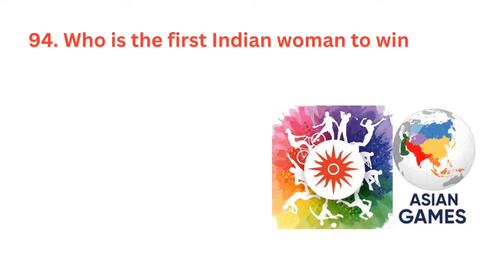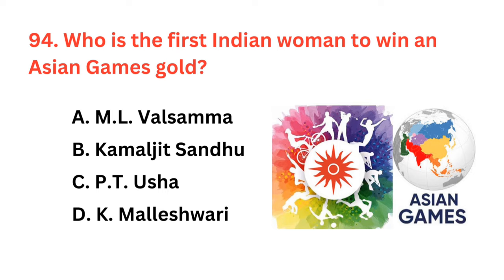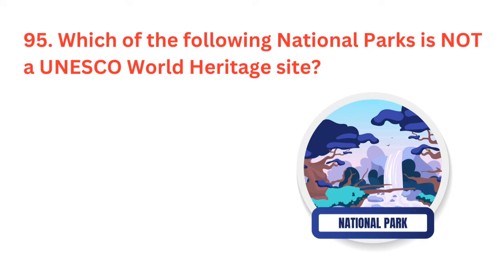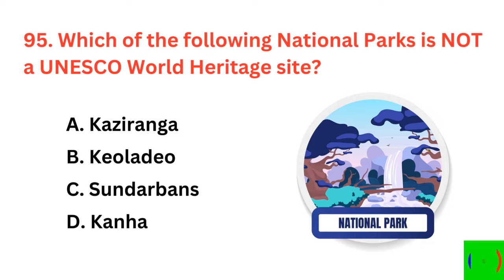Who was the first Indian woman to win an Asian Games gold? The correct answer is option B: Kamaljeet Sandhu. Which of the following national parks is not a UNESCO World Heritage Site? The correct answer is option D: Kanchenjunga National Park.